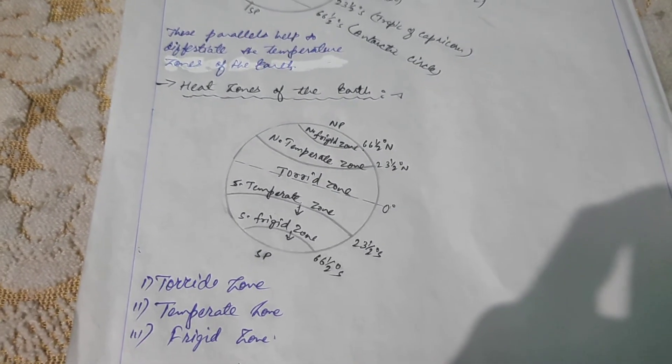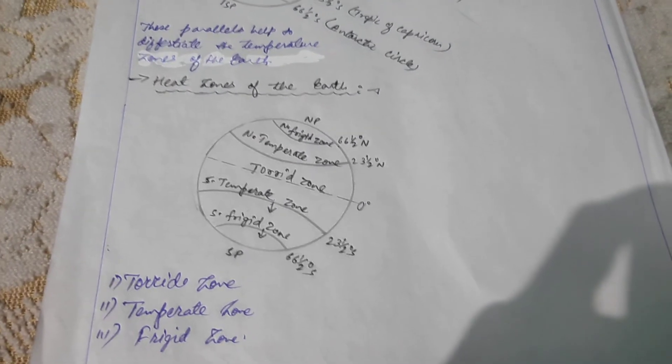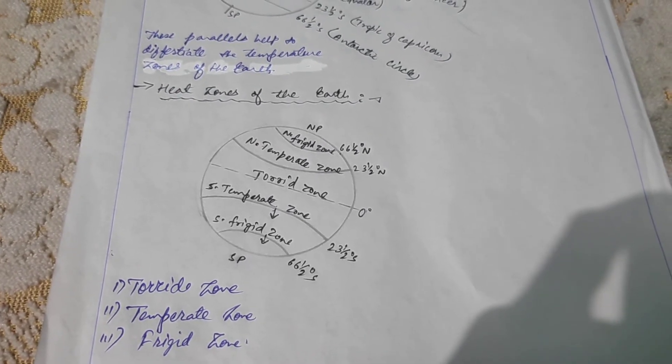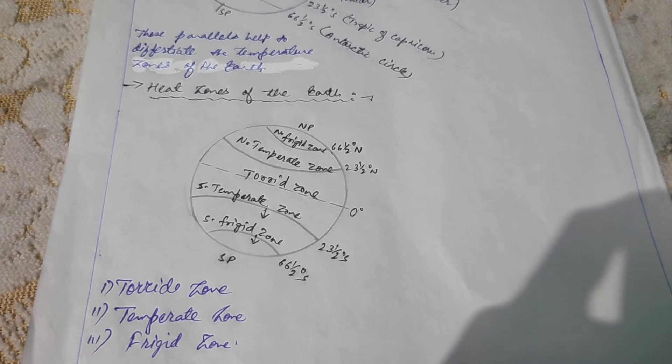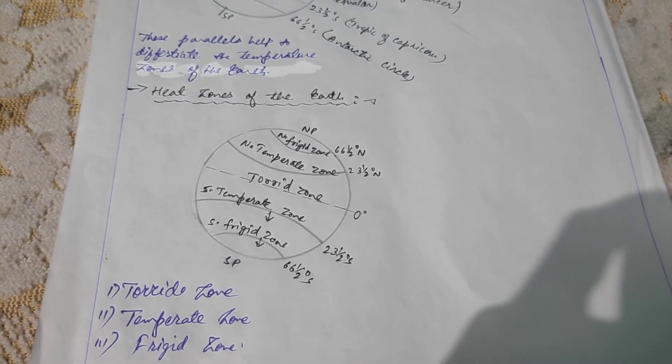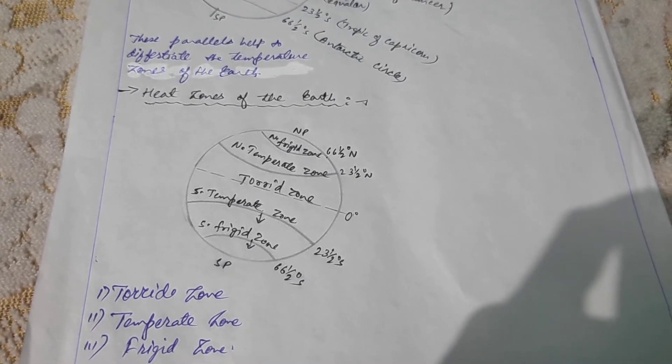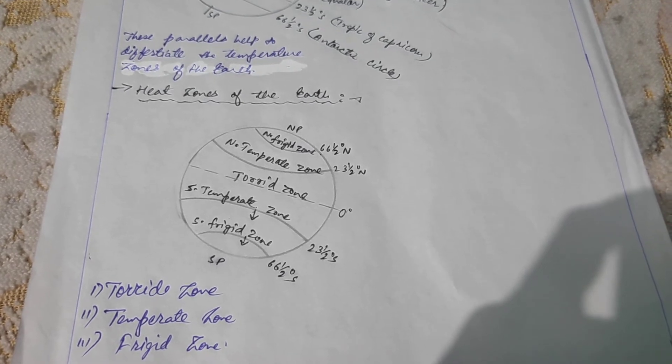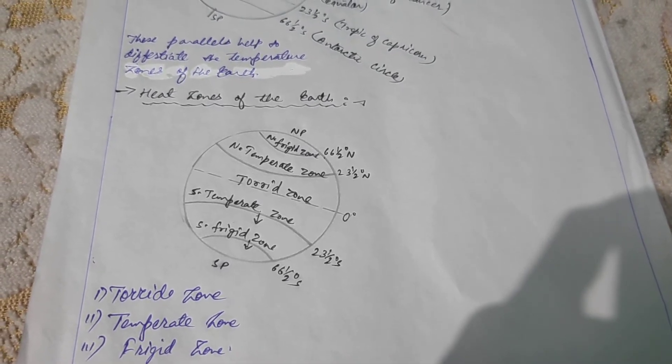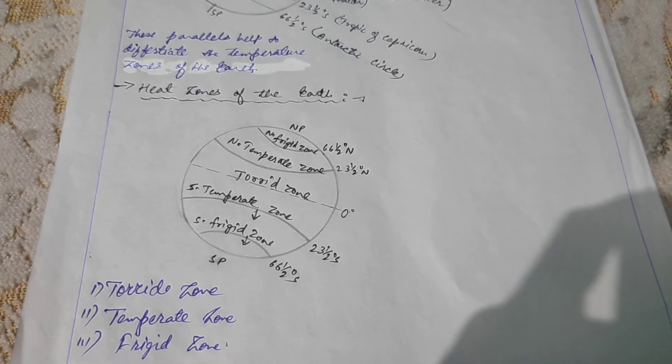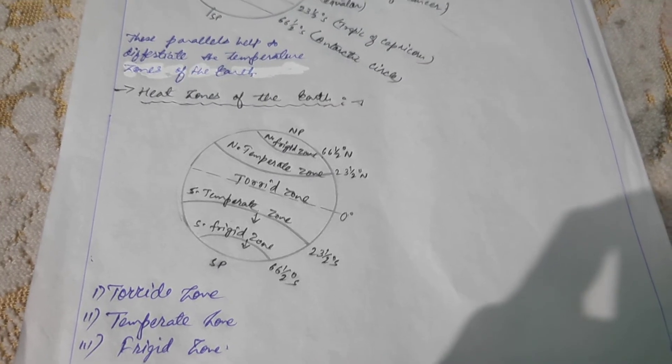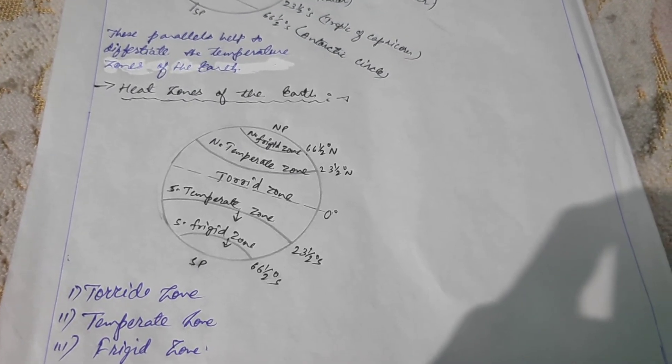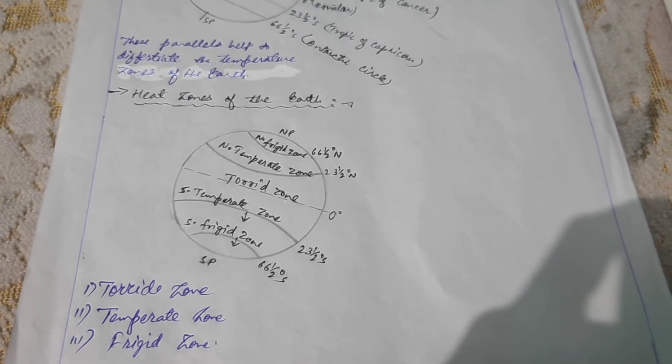The other zone is temperate zone. The latitudes lying between the tropic of Cancer and the Arctic circle in the northern hemisphere and between the tropic of Capricorn and Antarctic circle in the southern hemisphere get the inclined rays of the sun. These regions are therefore moderately heated. They are called temperate zone.